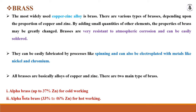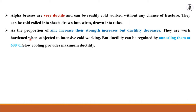The first type is alpha brass — up to 37% zinc — processed by cold working. The second is alpha-beta brass — 33 to 46% zinc — for hot working. Alpha brasses are very ductile and can be cold worked without any chance of fracture, so they can be cold rolled into sheets, drawn into wire and tubes. As the proportion of zinc increases, strength also increases but ductility decreases. They work-harden when subjected to intensive cold working, but ductility can be regained by annealing them at 600 degrees centigrade. Slow cooling provides maximum ductility.